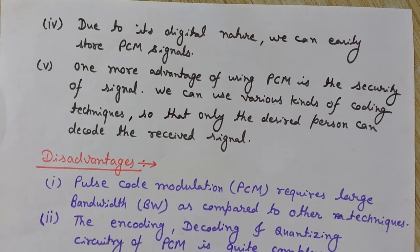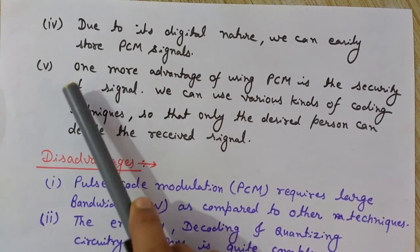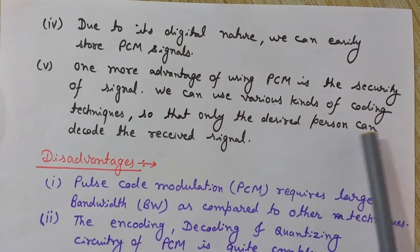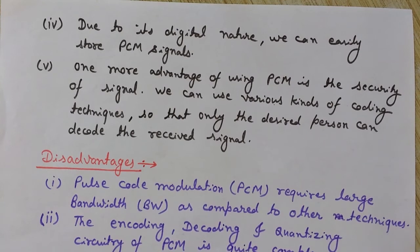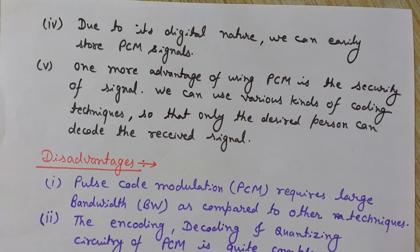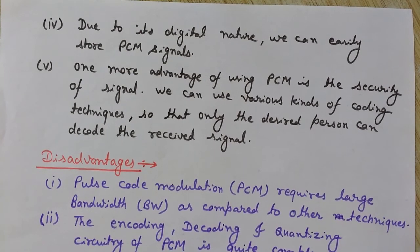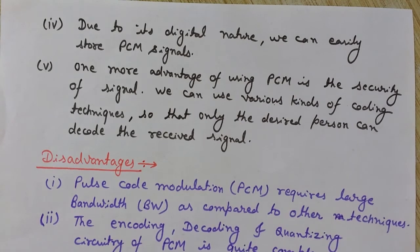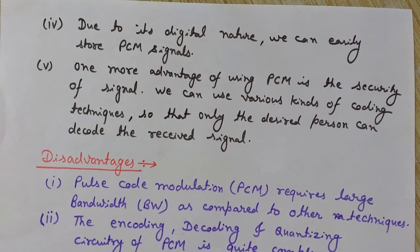The fifth advantage is the security of the signal. We can use various kinds of coding techniques so that only the desired person can decode the received signal. This is an important advantage of PCM, highly used in security applications for transmitting sensitive or secure information. After applying these encoding techniques, only a specific decoder can decode the underlying data — for others it is just meaningless binary data. This property is highly used in banking or military services that require a high level of security.